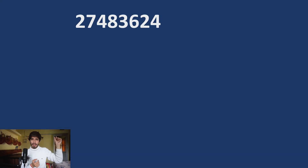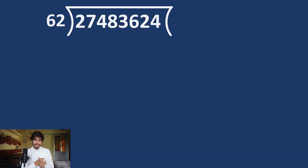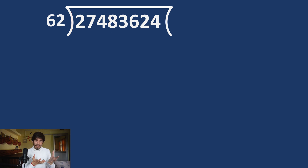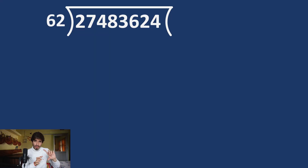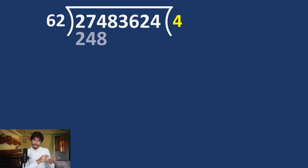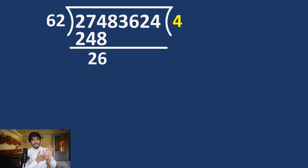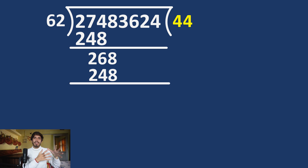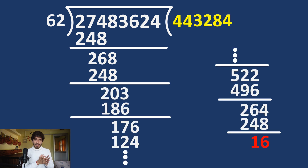Traditionally, if you want to divide this number by this number, we look at 274 — not 27 — because 62 is bigger than 27. So with 274, we hit and trial: 62 times 2, 62 times 3, 62 times 4. When we do 62 times 4 we get 248, and 62 times 5 is 310. So we use 62 times 4, subtract 248, get the remainder, bring down more digits, and repeat the procedure to get our answer.